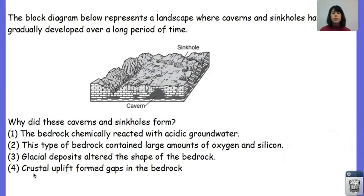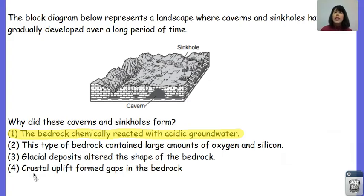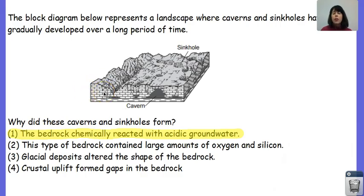Let's look at this practice problem. The block diagram below represents a landscape where caverns and sinkholes have gradually developed over a long period of time. Why did these caverns and sinkholes form? These caverns and sinkholes formed because the bedrock chemically reacted with the acidic groundwater. Carbon dioxide reacted with the water, making carbonic acid, which was able to eat away at the limestone. We know it's limestone because the brick shapes in the block diagram — found on page seven of your earth science reference tables — indicate limestone, which is composed of calcite.